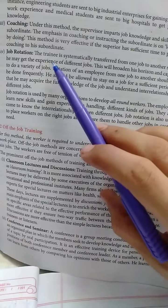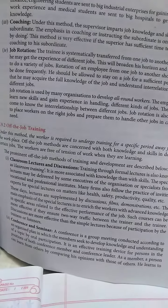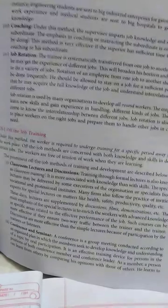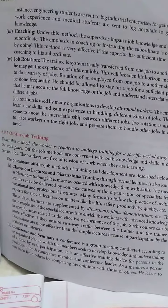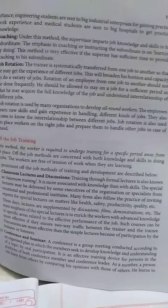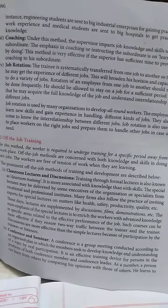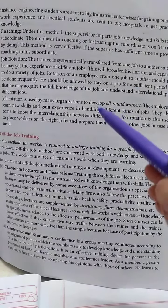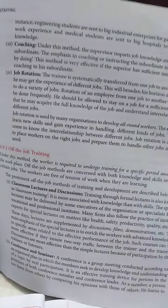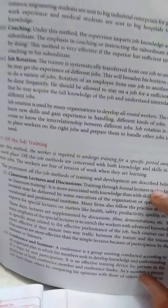Job rotation mein aapne ek kaam diya, woh usme trained hua, ek duration tak woh usmein raha aur phir aapne usko handle kar diya doosra job in case of need, agar aapko zaroorat hai. Because aapko pata hai he has that capacity, woh acquire kar sakta hai skills, knowledge hai uske paas. Isse uska all-round development hoga. Ye to humne padha on-the-job training methods, now comes off-the-job training method.